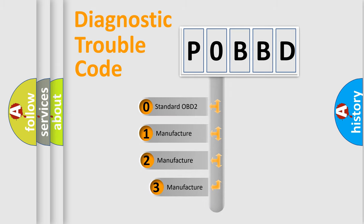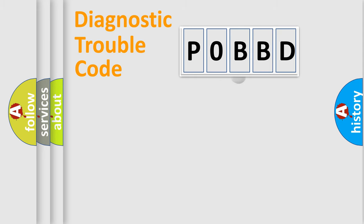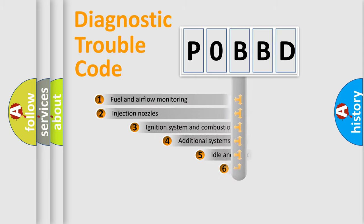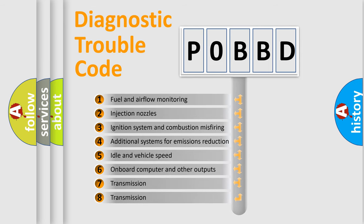If the second character is expressed as zero, it is a standardized error. In the case of numbers 1, 2, or 3, it is a more precise expression of the car-specific error. The third character specifies a subset of errors.